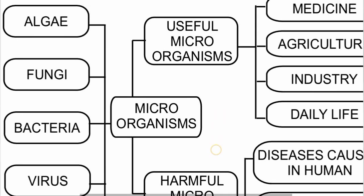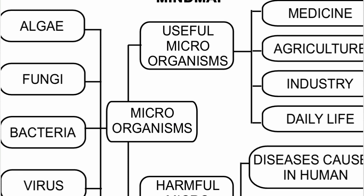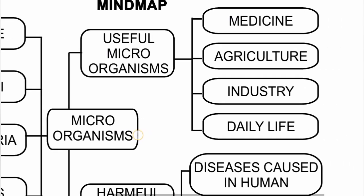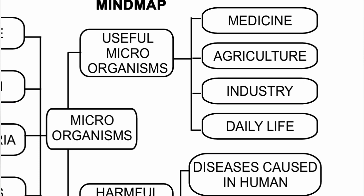Useful microorganisms cover: medicine — antibiotics and vaccines; agriculture — natural fertilizer, nitrogen fixation, and biocontrol agents; industry — sewage treatment, production of biogas, production of alcohol and wine, and microbes in retting and tanning; daily life — making bread, preparation of curd, and supporting the human intestine.